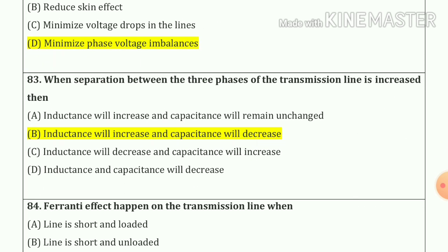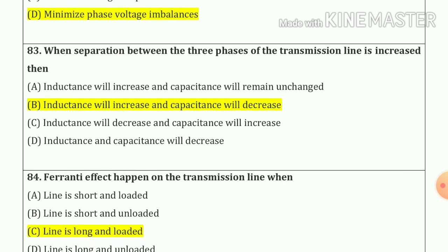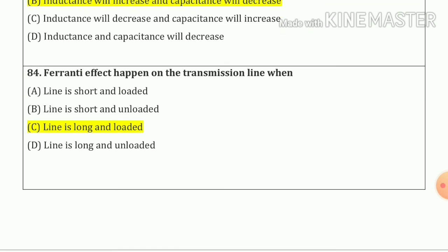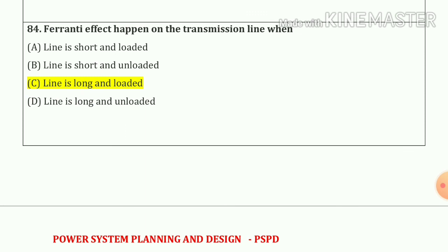Question number 83: when separation between the three phases of a transmission line is increased, inductance increases and capacitance decreases — option number B. Question number 84: the Ferranti effect happens on a three-phase transmission line when the line is long and lightly loaded — option number C.